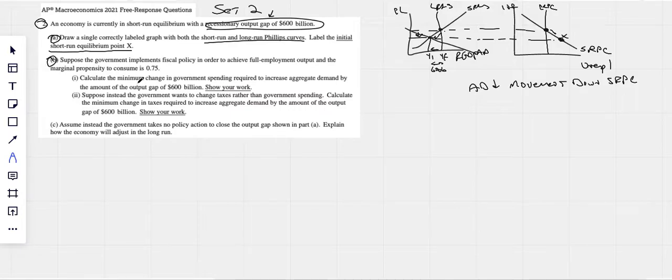B, suppose the government implements fiscal policy in order to achieve full employment output and the marginal propensity to consume is 0.75. Okay. Calculate the minimum change in government spending required to increase aggregate demand by the output gap. So they want to shift fiscal policy, wants to shift aggregate demand back. That means government spending either needs to increase or taxes need to go down. That's expansionary fiscal policy.